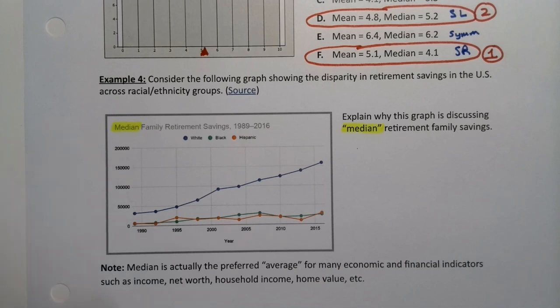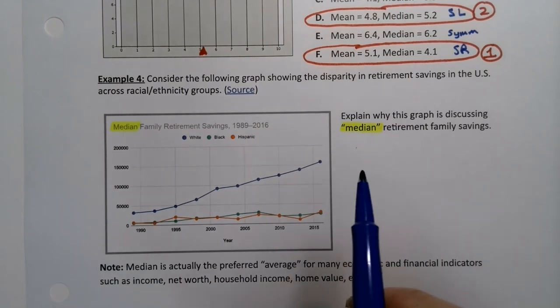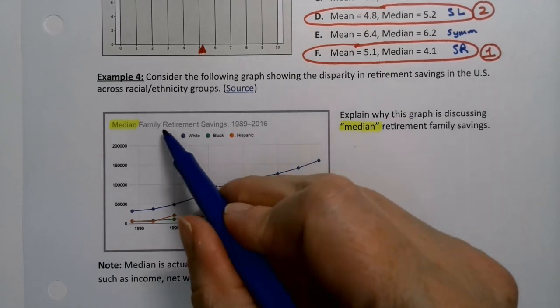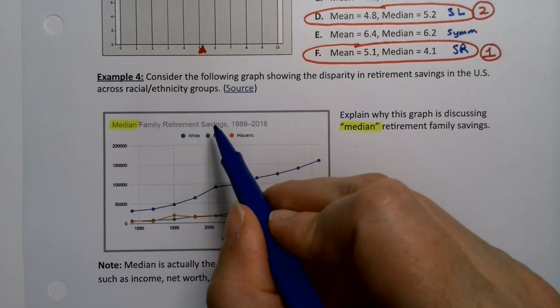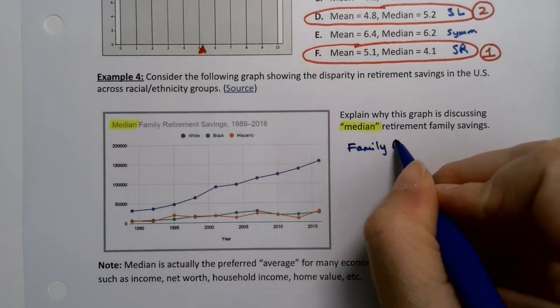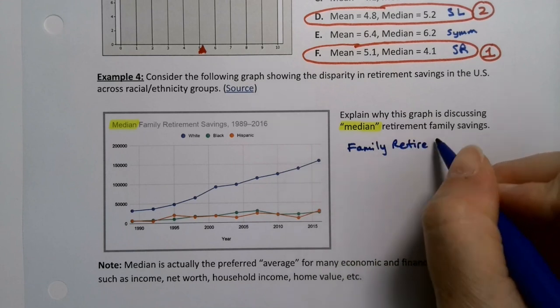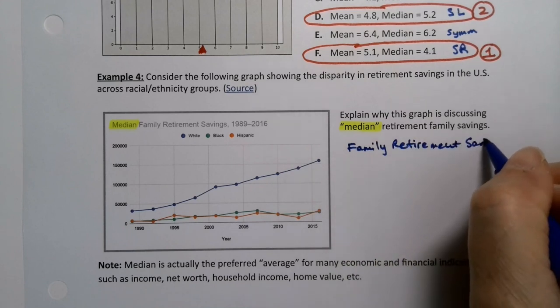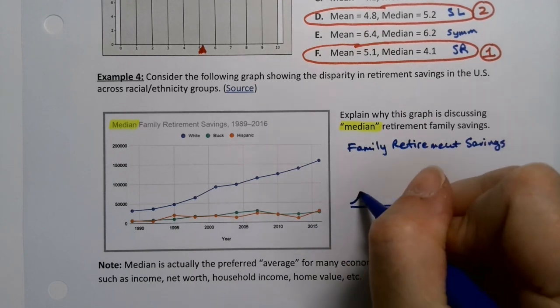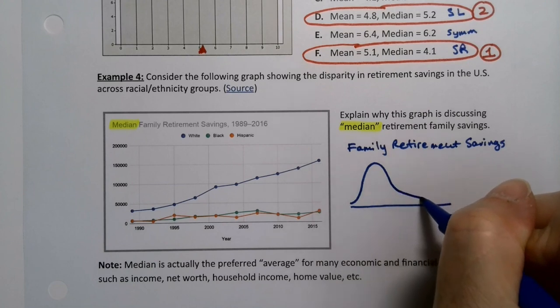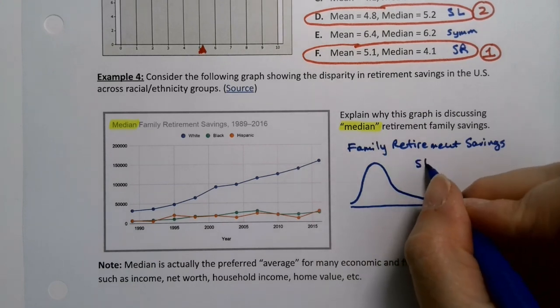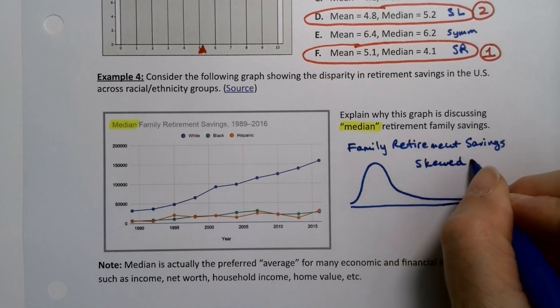So why is it saying median? Well, that's because when you think about family retirement savings, it's skewed right. Look at, think of the picture. It looks like this: most people are here, but some people are way over here. So it's a skewed right distribution. It has to be.